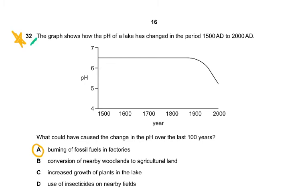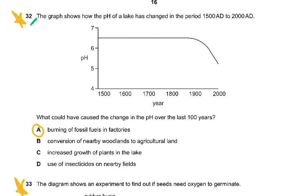Question 32: The graph shows how the pH of a lake changed from 1580 to 2080. The pH decreased from 6.5 to around 5 over the last hundred years. The cause is burning of fossil fuels in factories, which produces oxides of nitrogen and sulfur dioxide. These dissolve in water and form acid rain, lowering the pH of the lakes.